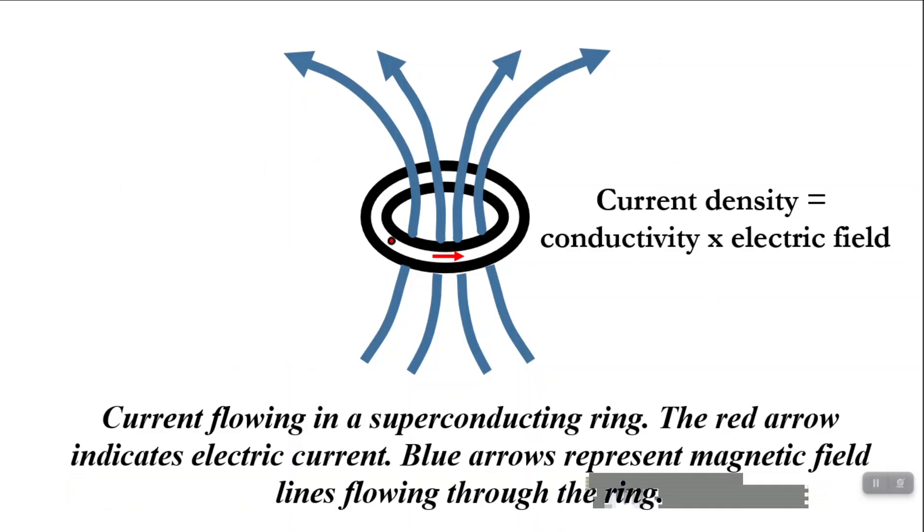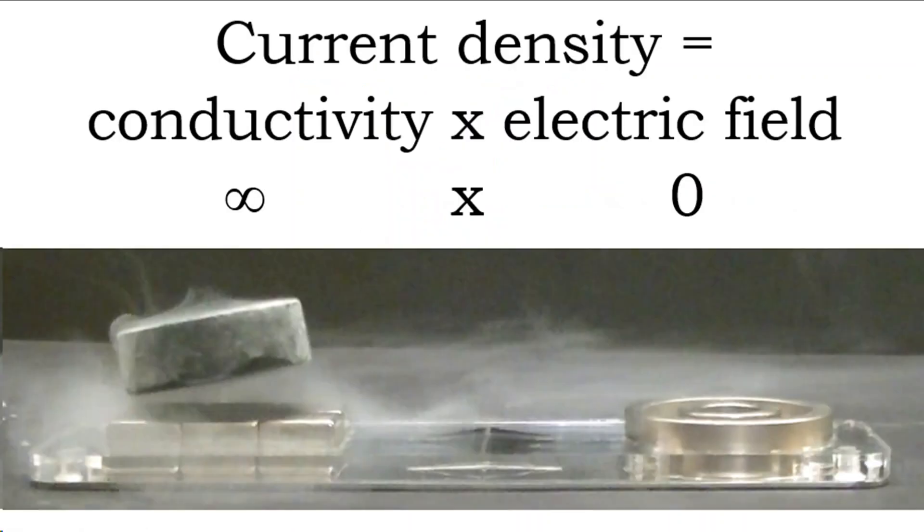But that's not physically possible. So to keep the current density finite, the electric field associated with the superconductor is equal to zero. And in this case, infinity times zero gives a finite value.